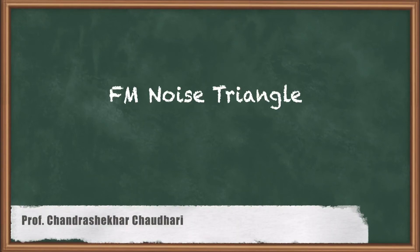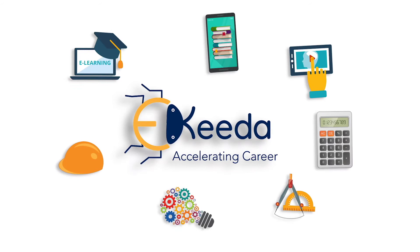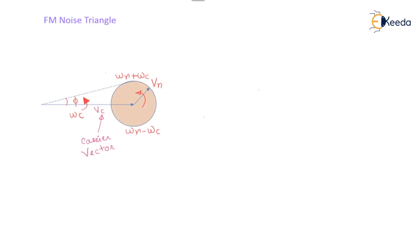Now we will see the FM noise triangle, which will indicate the immunity of the system with respect to noise — we can check how much amount of noise will be getting added to the FM system. Here in the diagram we will consider a single noise voltage having a frequency which falls in the passband of the receiver. This noise voltage will be mixed with the carrier vector Vc.